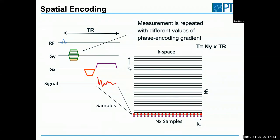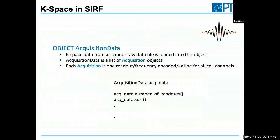In the SURF environment, we refer to the K-space as an AcquisitionData object that contains the acquired K-space. In this AcquisitionData we have a list of acquisition objects, and one acquisition object is one of these K-space lines along the x direction — usually referred to as a readout or frequency encoding line.